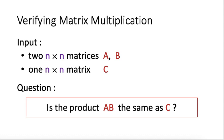Let's come back to the second part of lecture 3. Let us look at the problem of verifying matrix multiplication. The input here is we have two n-by-n matrices, A and B, and then we have one other n-by-n matrix, let's call it C.